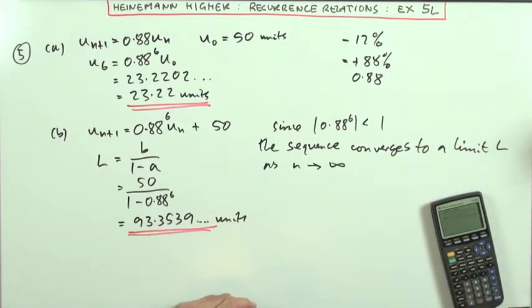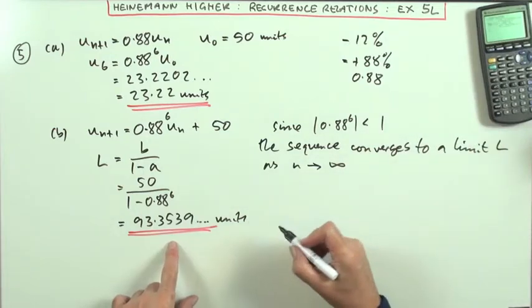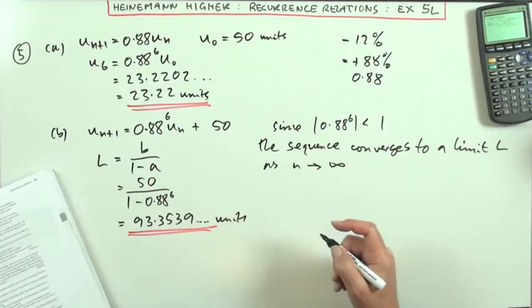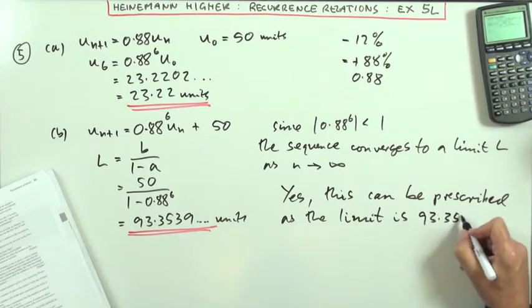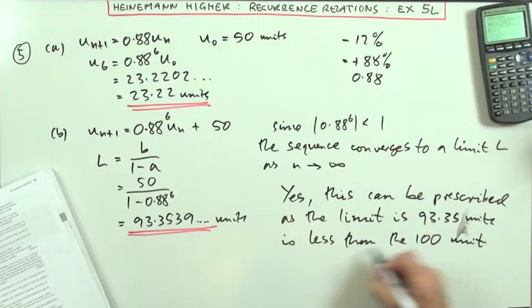For my answer, that's what the amount will be in the long run. So the question would be exactly, should the doctor prescribe it? Yes, this can be prescribed as the limit is 93.35 units, which is less than the 100 unit danger level. Yep.